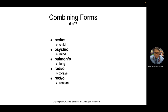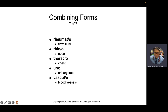Pediatrics — 'pedio.' Rheumatoid — think synovial fluid. 'Oid' means resembling. So the bad fluid in a knee causing trouble resembles synovial fluid, but isn't really. Rhino. Thoraco means chest — so cardiothoracic surgery handles the heart or anything in the thoracic region. Vascular surgery deals with blood vessels: arteries, veins, capillaries.